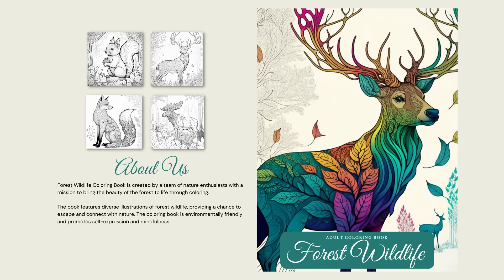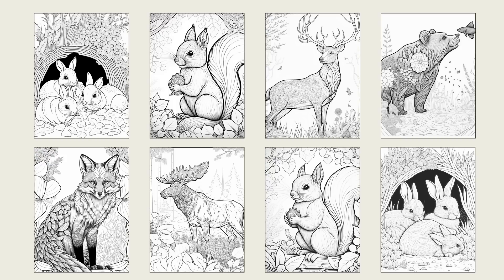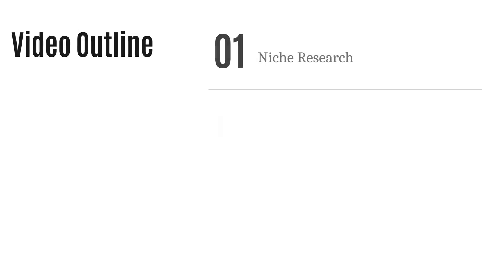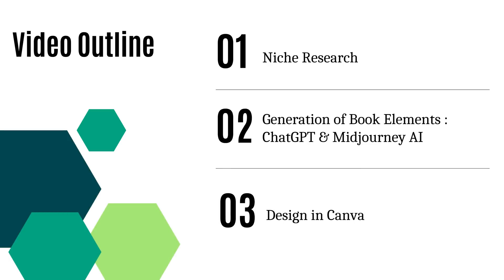Hi and welcome to the channel. Today I'll be doing an in-depth tutorial on how to create coloring books using some AI tools. We'll be covering three steps: niche research, focusing on the Amazon platform; using ChatGPT and MidJourney AI to get the book elements and pictures; and finally, using Canva to put everything together. This is part of a mini series on digital products to sell online with the help of AI tools.